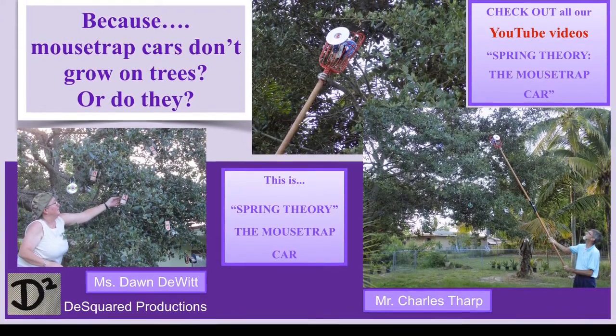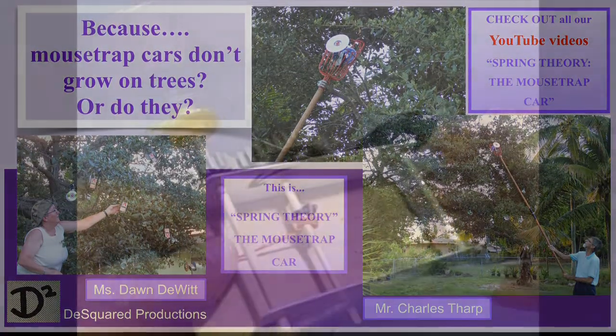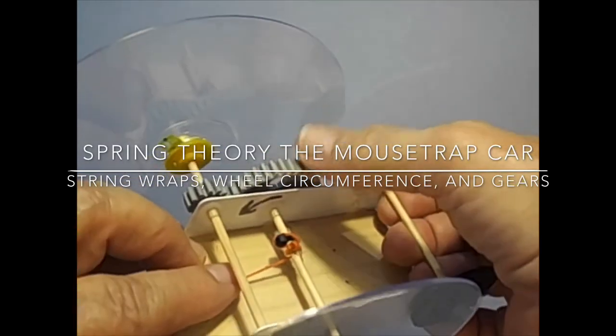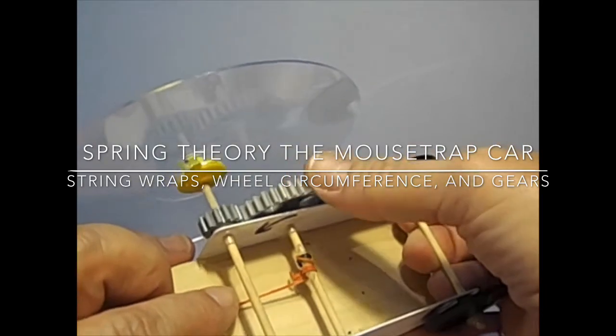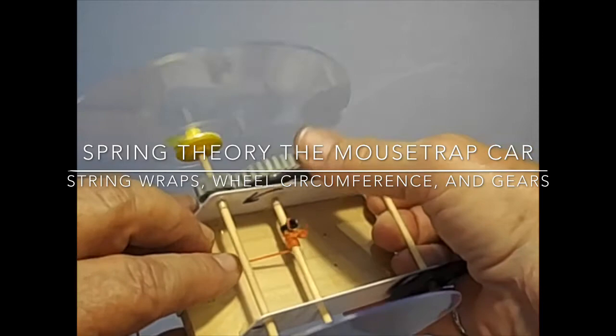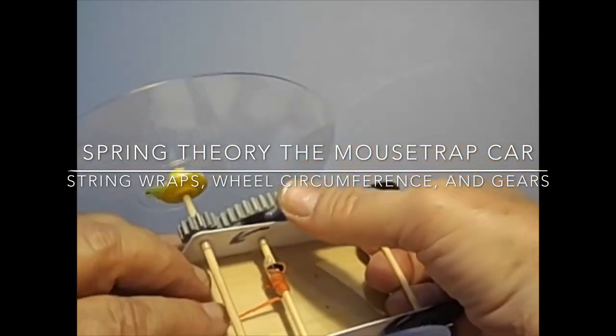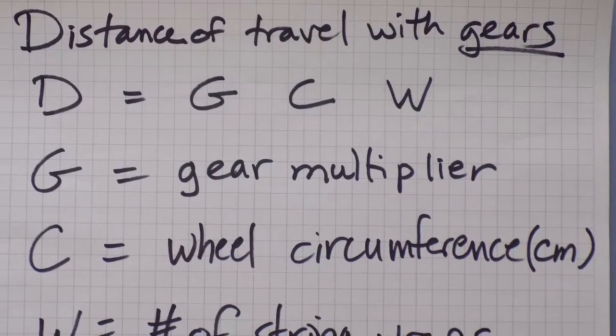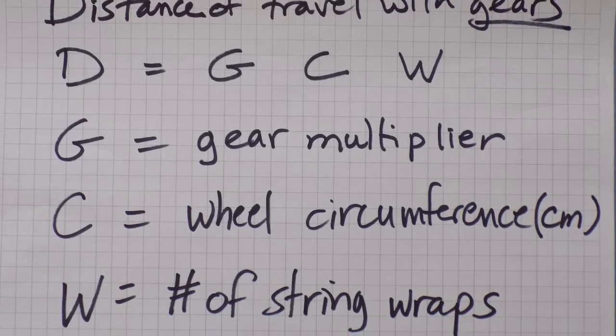In the Spring Theory video on string wraps, wheel circumference, and introduction to gears, we discussed how to predict the distance a mousetrap car will travel using the known variables of gear multiplier, circumference of the drive wheel, and number of string wraps using the formula D = G × C × W.